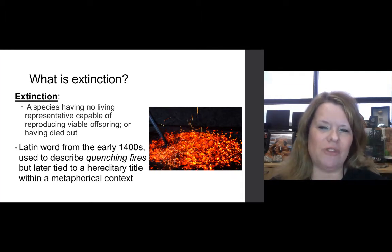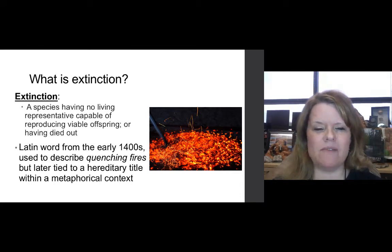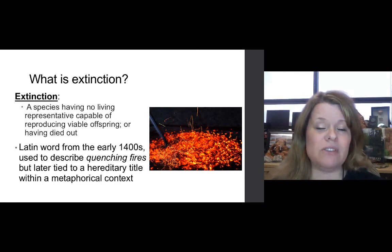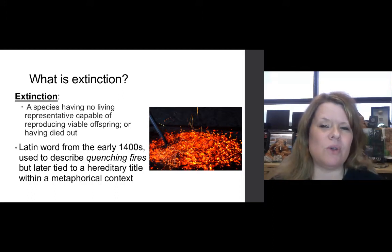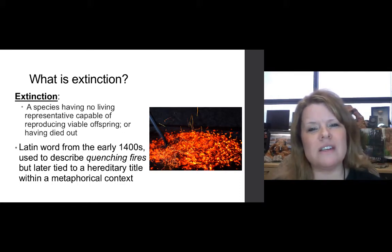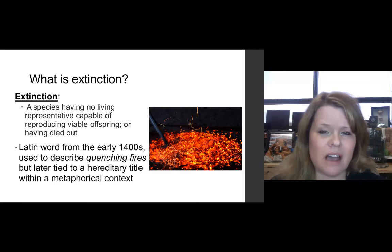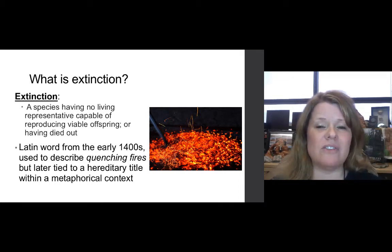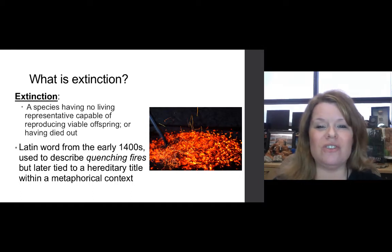First you have to define what the term extinction is. It refers to a species having no living representative capable of producing viable offspring — it's died out. Viable offspring means being able to reproduce again with children that can also reproduce. Sexual fitness refers to the ability of an organism to have the traits or ability to pass genes on. This is a crucial aspect of extinction, because many organisms have gone extinct simply because they couldn't pass on their genes successfully.